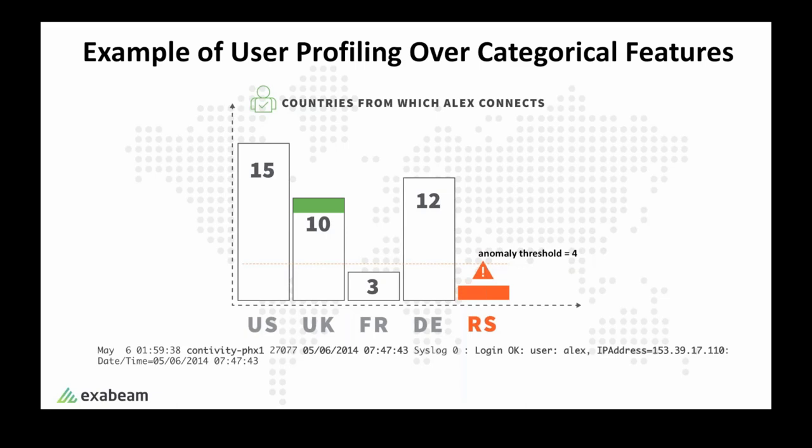Some profiles are tailored for different specific event types — for example, user profiles over devices for logon events versus remote access events. Some profiles are for two-way tracking — for example, user profiles over devices and device profiles over users. Some profiles are based on peers. The design and choice of all these profiles are driven by security experts with data scientists supporting them.